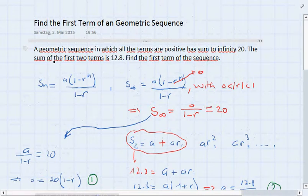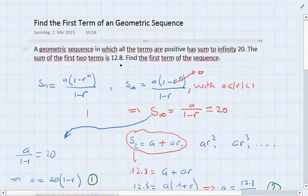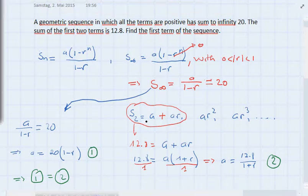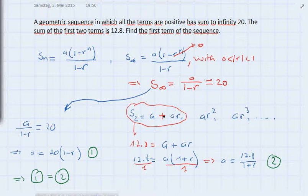The second piece of information in the exercise says the sum of the first two terms is 12.8. In a geometric sequence, to move from the first term to the next, you multiply by the common ratio r. So the second term is the first term times r.